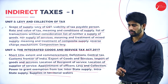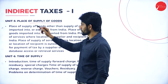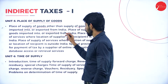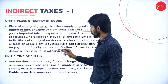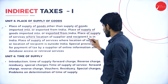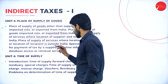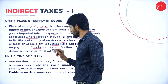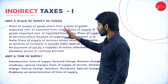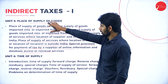Unit number five covers place of supply of goods. You will learn: place of supply of goods other than goods imported into or exported from India, place of supply of goods imported into or exported from India, place of supply of services where location of supplier and recipient is in India, place of supply of services where location of supplier or recipient is outside India, and special provisions for payment of tax by supplier of online information and database access or retrieval services.